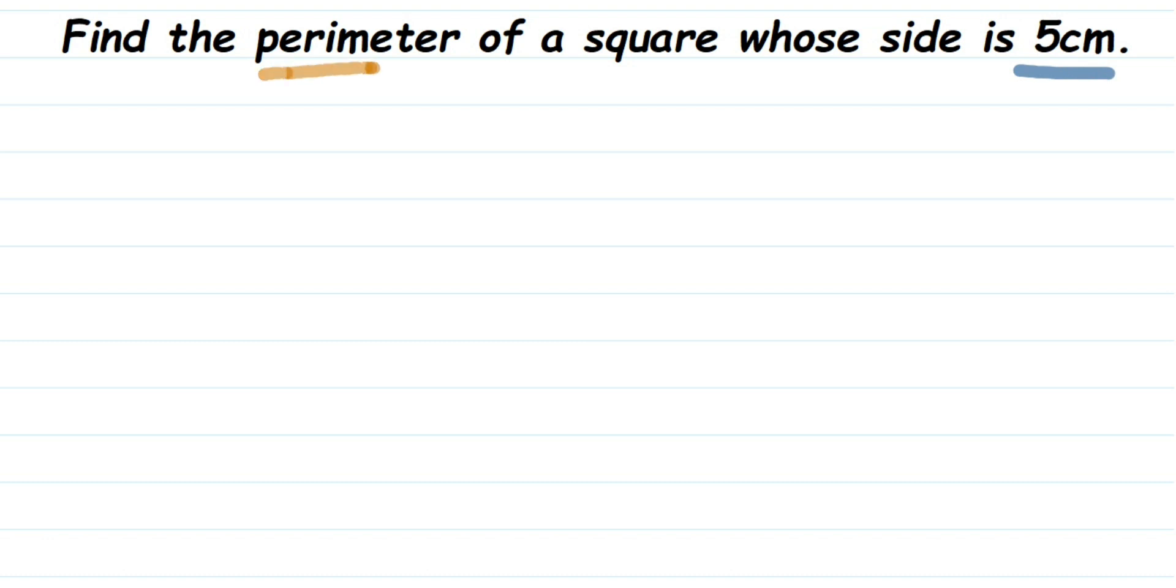We have to find the perimeter of the square. We'll directly use a formula. Let's start with what we know: the side equals 5 centimeters. What we have to find out is the perimeter, that is capital P.